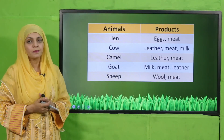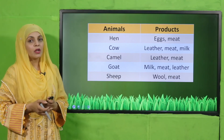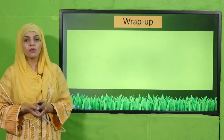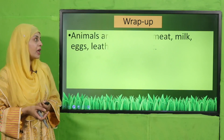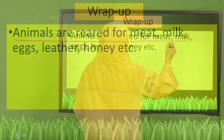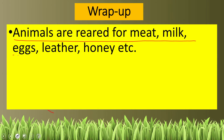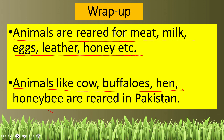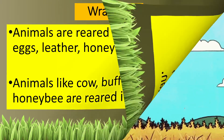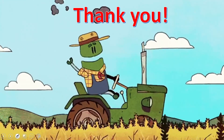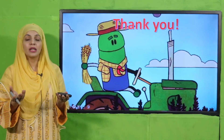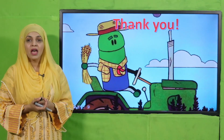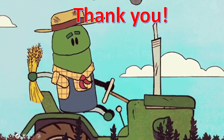Today we have learned that animals are reared for meat, milk, eggs, leather, honey, and more. Animals like cows, buffaloes, hen, and honeybees are reared in Pakistan. My dear students, today we have completely read about animal rearing. I hope you enjoyed the lecture. Keep everybody around you safe, have a good day, thank you so much.